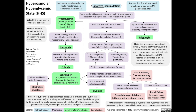Because the patient is urinating out so much water, that results in dehydration, evidenced by a reduced jugular venous pressure (JVP) and signs of orthostasis, such as postural hypotension, postural tachycardia, and increased resting heart rate.